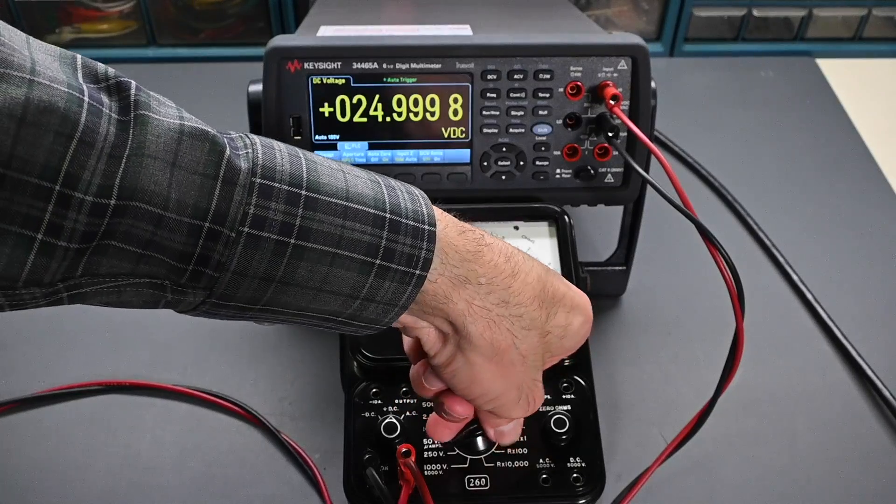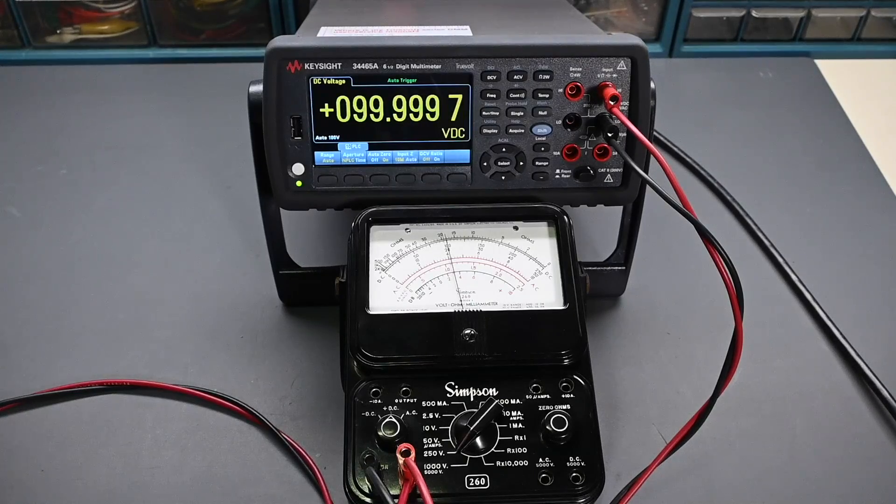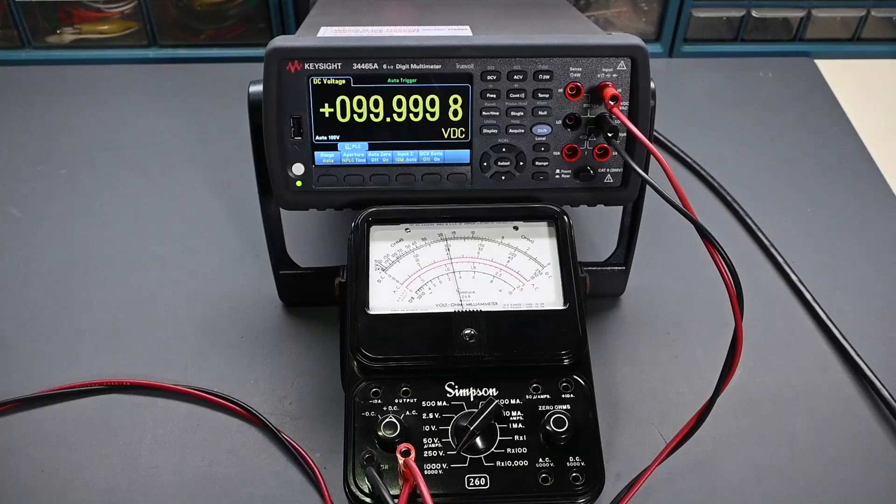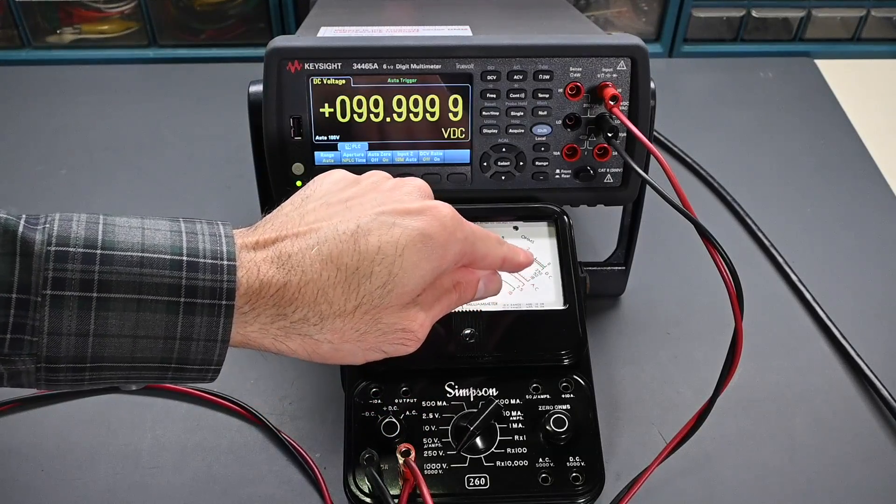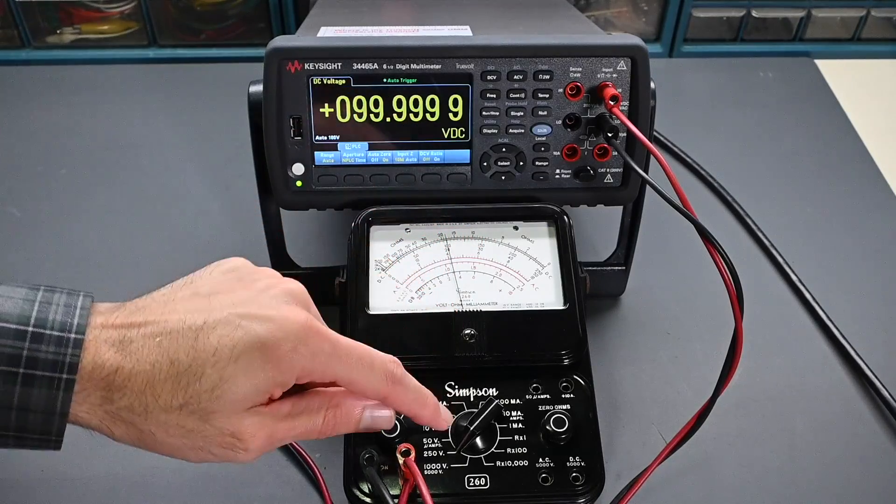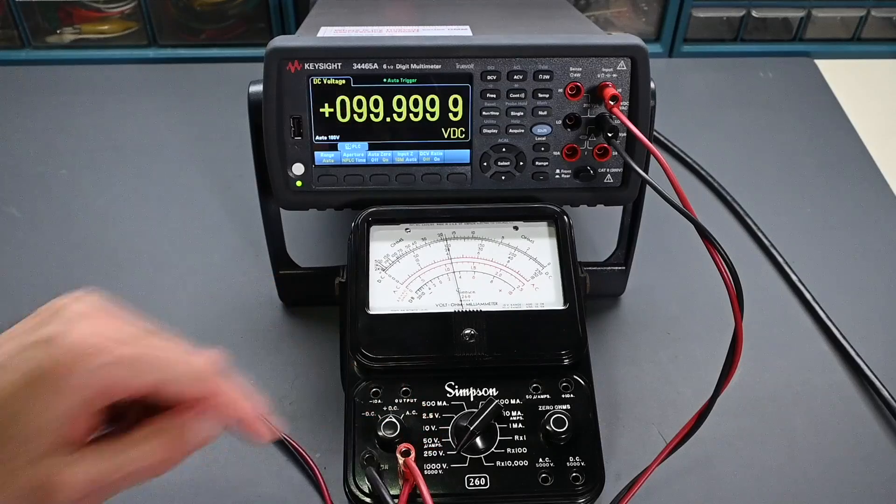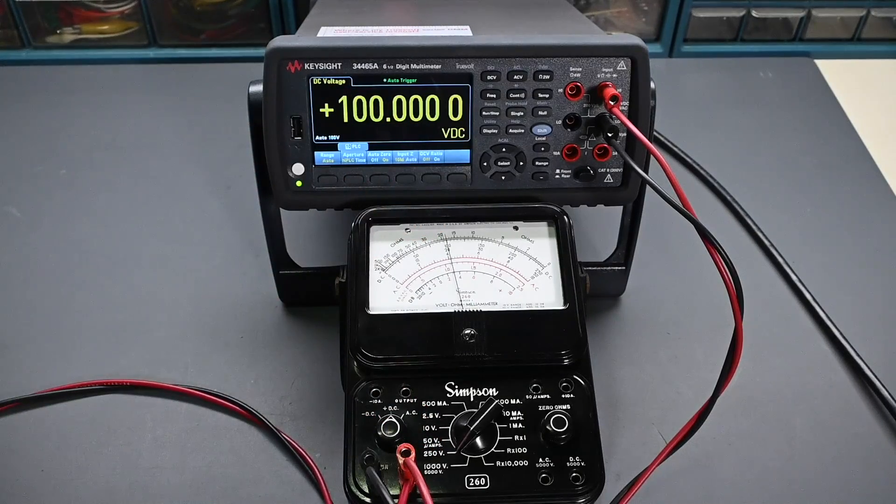Let's try 250 volts. So, for 250 volts, my power supply stops at 100 volts. So, we'll just go to that maximum. Alright, so there's 100 volts. 99, all 9's right there. And, that looks really good. So, 250 full scale. 200, 150, and 100. So, it's right on. Again, this is where the multiplier resistor was just repaired. So, that range has come back into the accuracy that we'd want to see. That looks perfect.